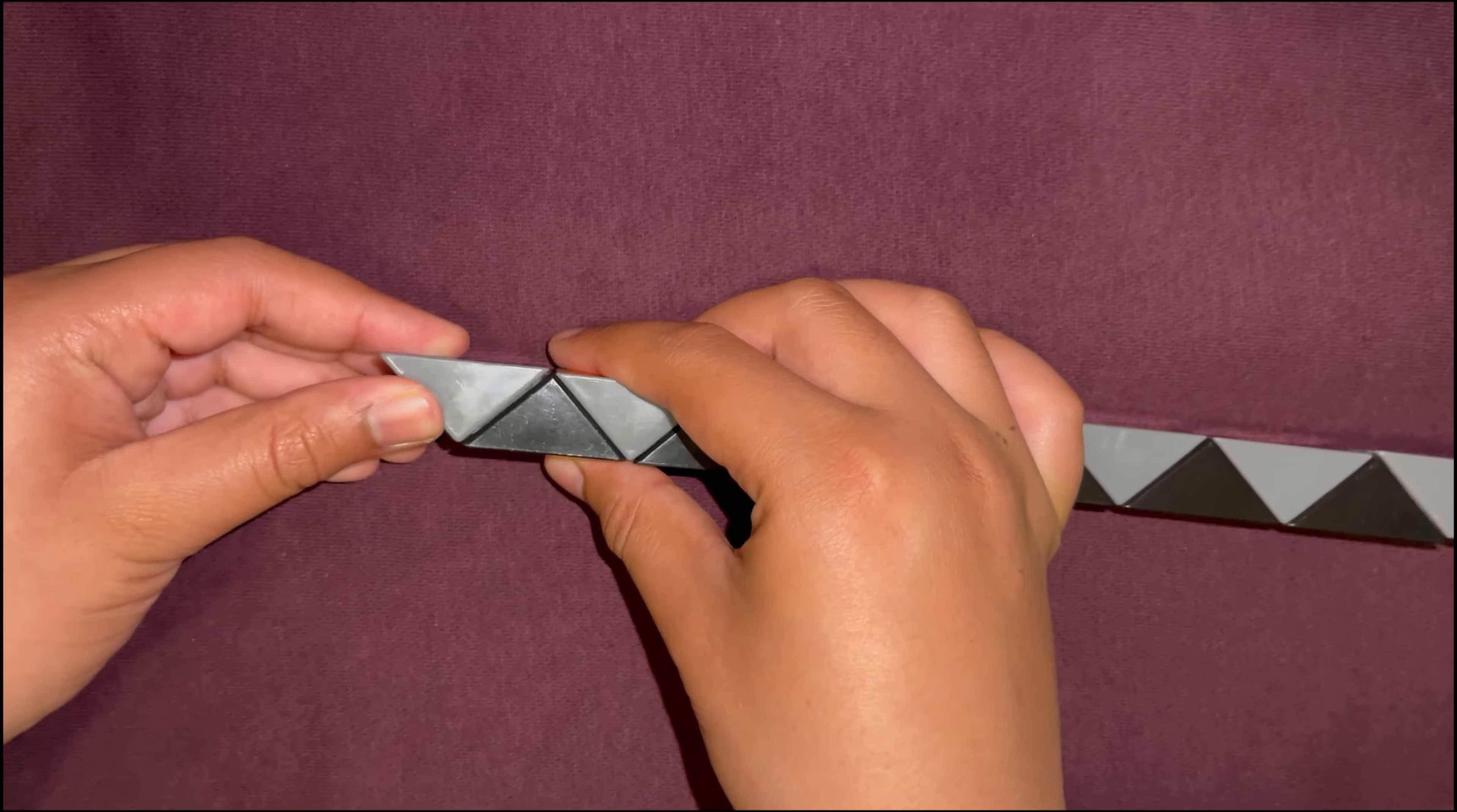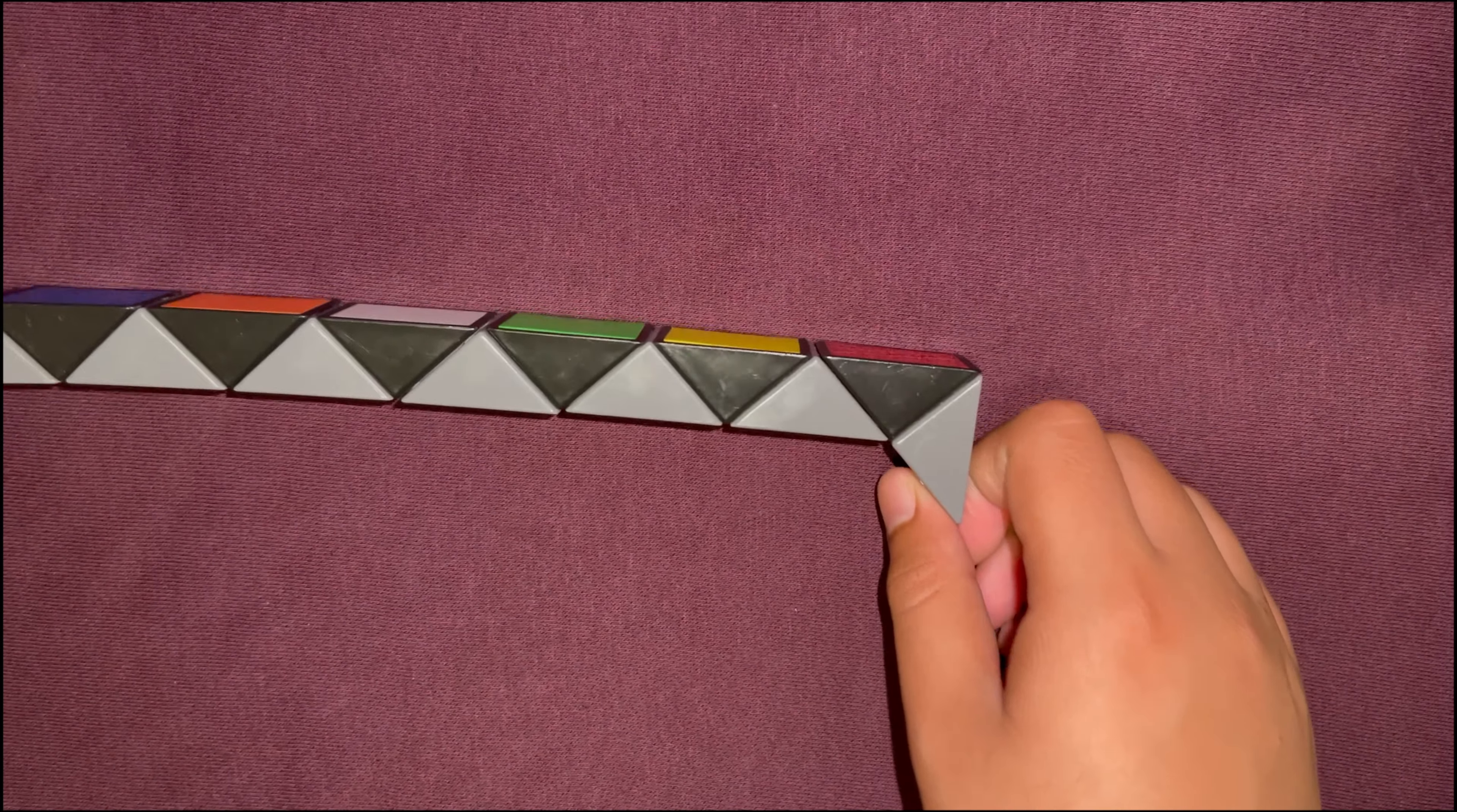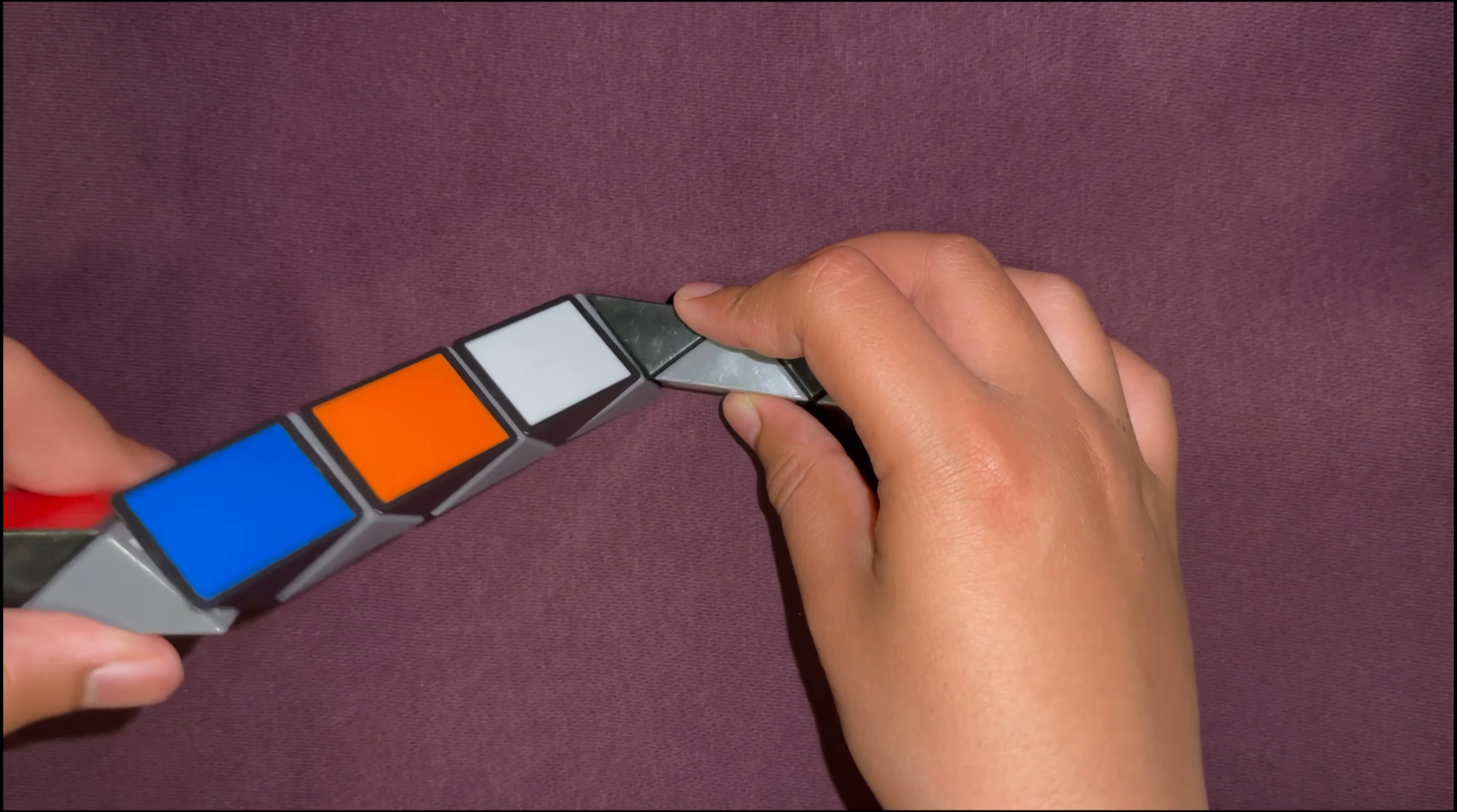You're going to turn the first block two times and make it face like this. Now count five blocks—one, two, three, four, five—and turn this sixth block upwards like that.